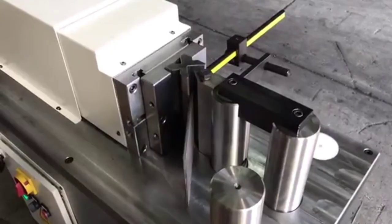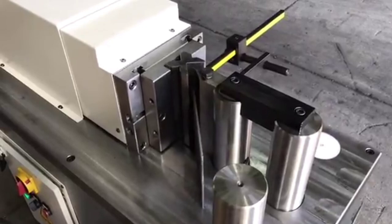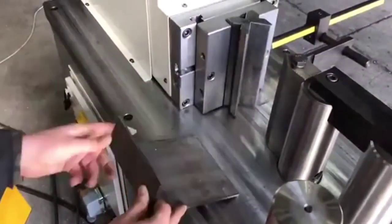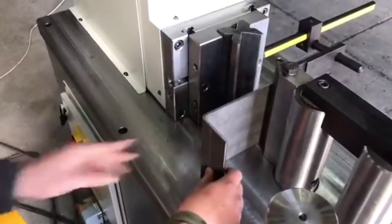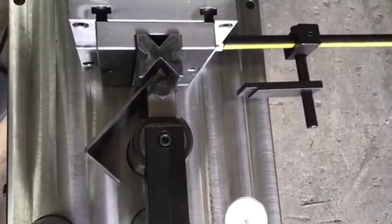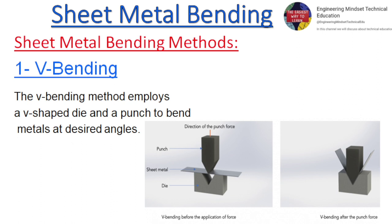This method employs a V-shaped die and a punch to bend metals at desired angles.